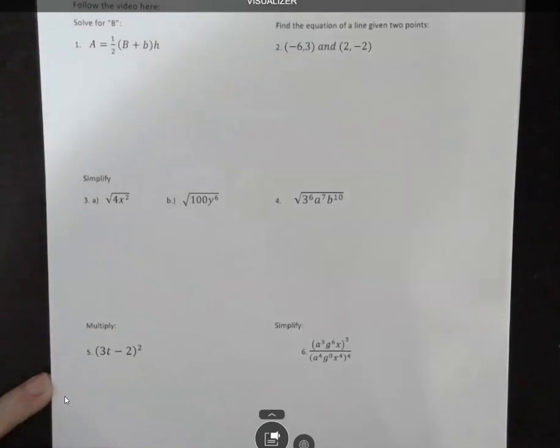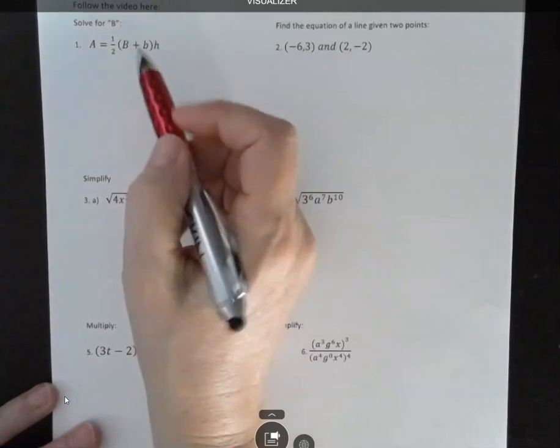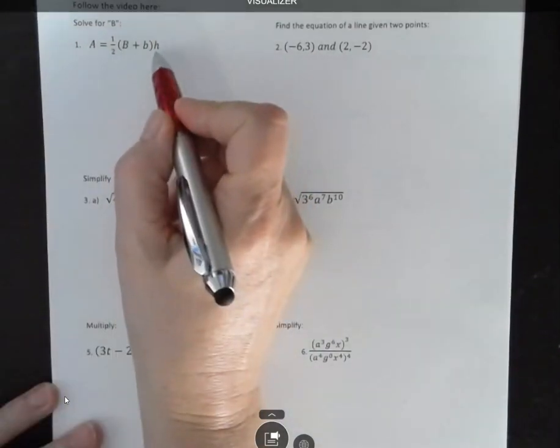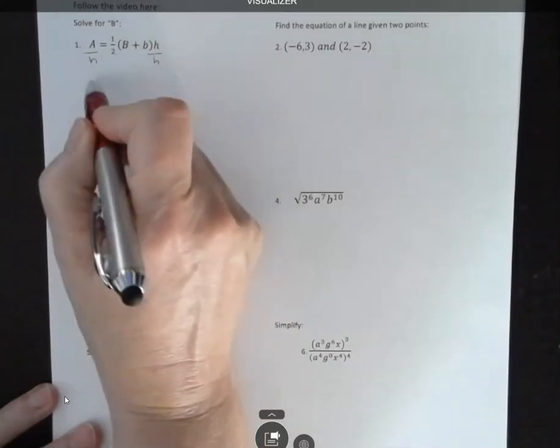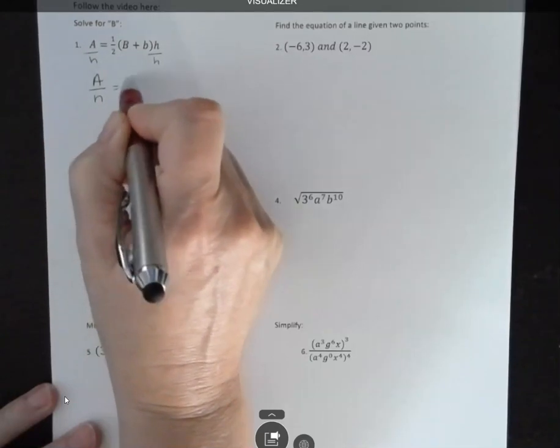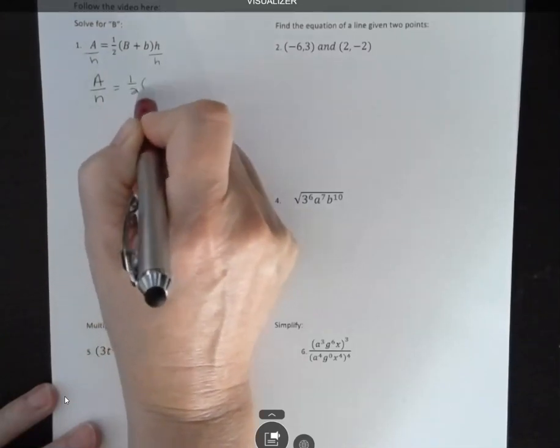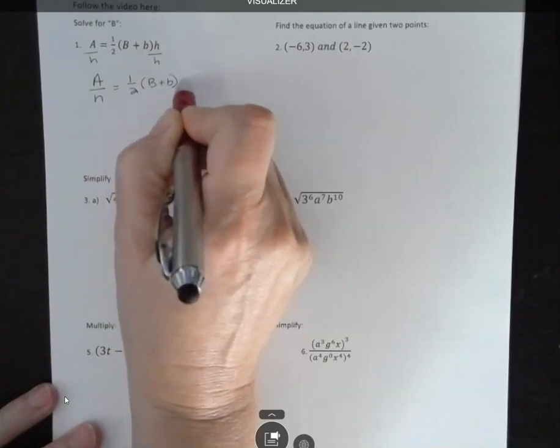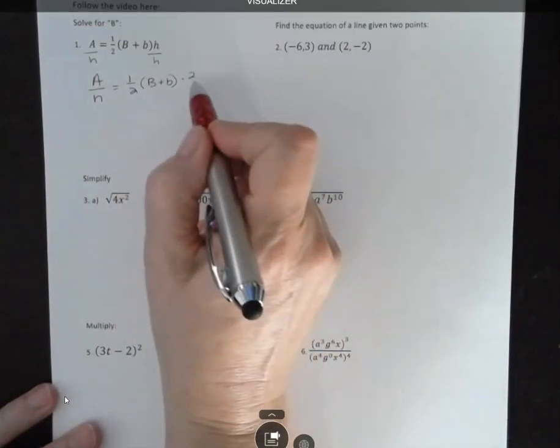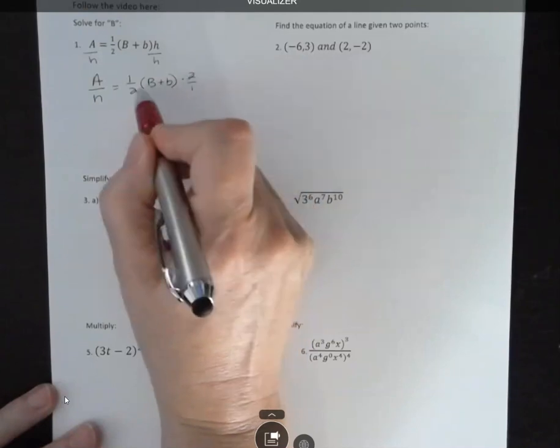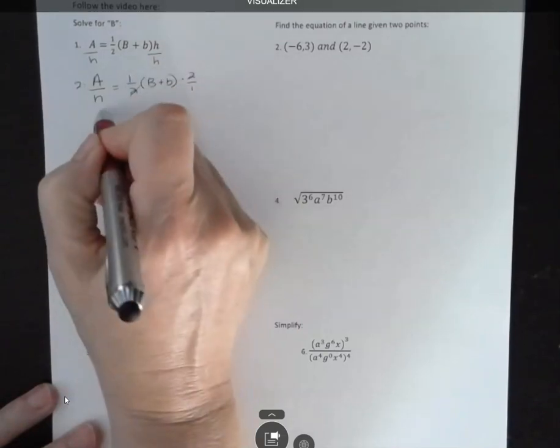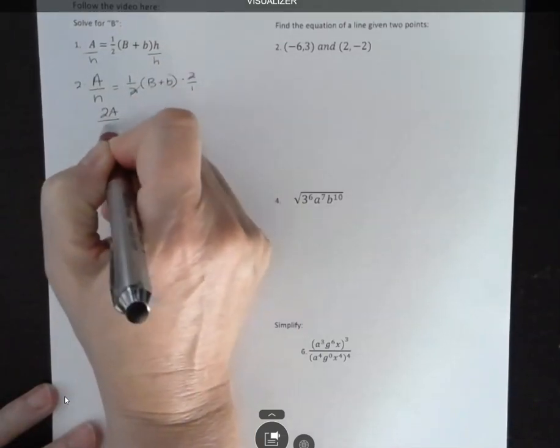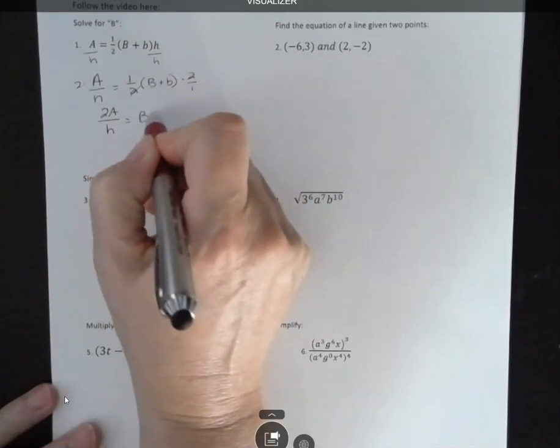In the first one, it's going to ask you to solve for a variable. It may have a fraction in it like this one. It may not be the exact same one. I'm going to start off by getting rid of this h. I'm going to divide both sides by h, and that gives me A over h. Then I'm going to get rid of the one-half by multiplying both sides by 2. You can think of that as 2 or 2 over 1, but that 2 would cancel that 2 on that side. Then I'm going to multiply by 2 over here, and that's going to give me 2A over h equals b plus B.